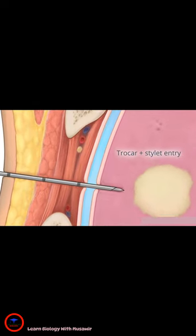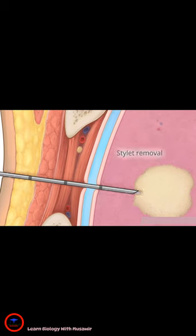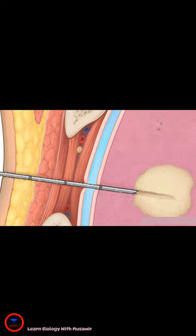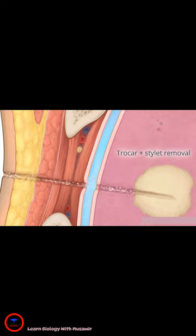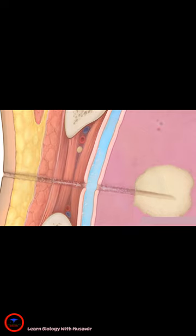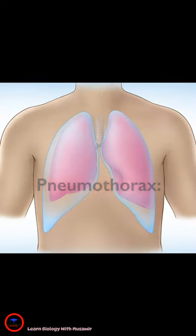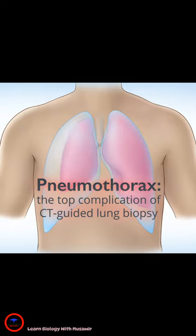If a suspicious lesion is found in a patient's lung, a biopsy is performed to sample the tissue using CT guidance. As a result, air can rush into the pleural cavity during or after the procedure. This is called pneumothorax, the top complication of CT-guided lung biopsy.